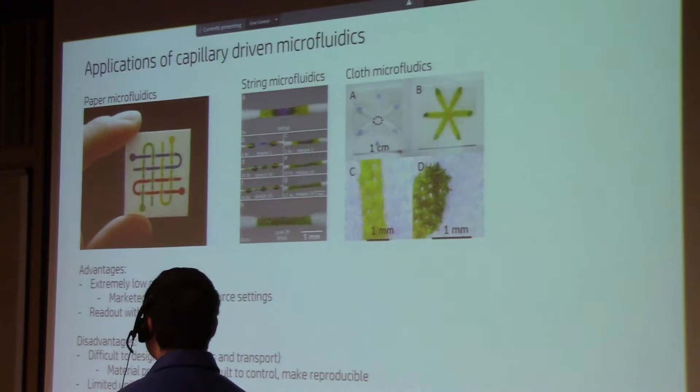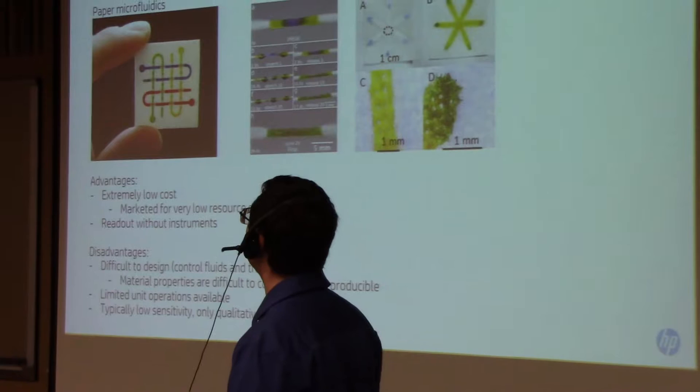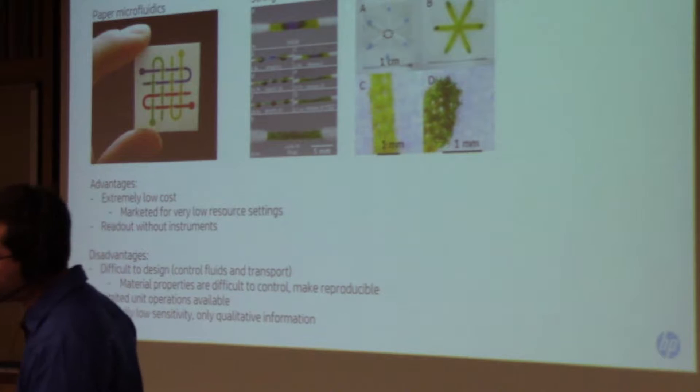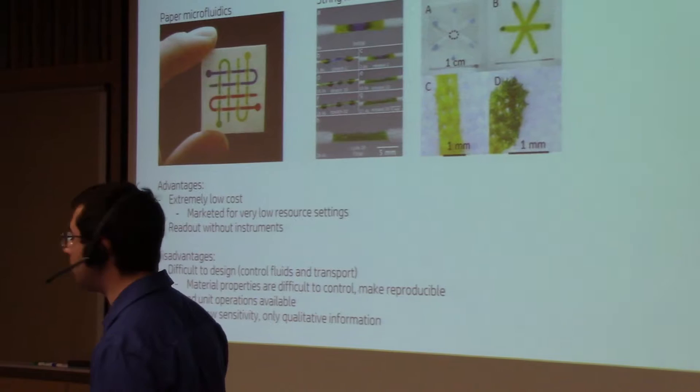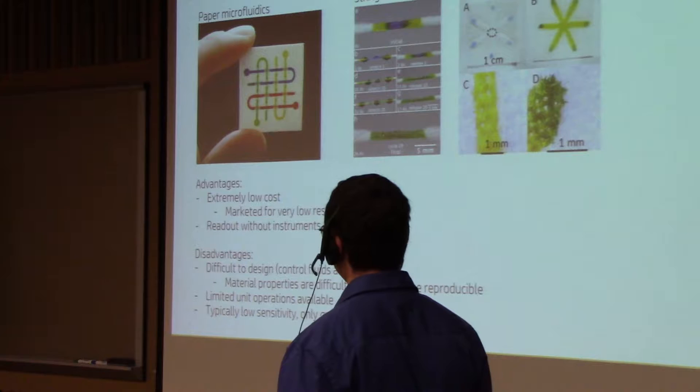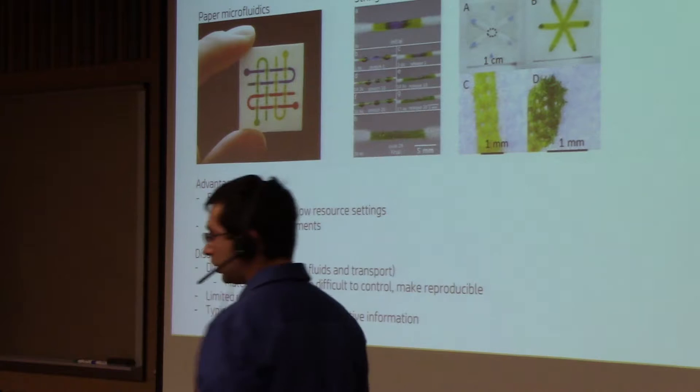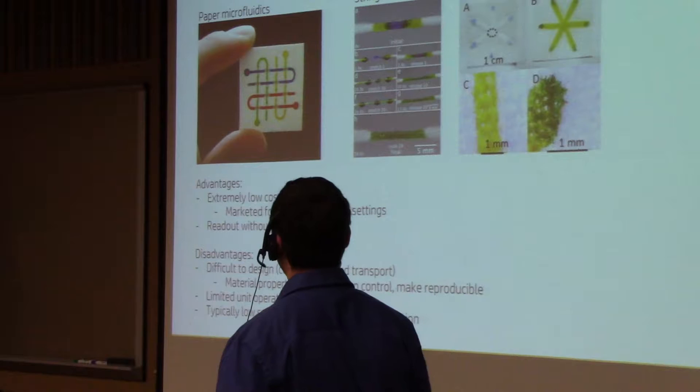There's also a limited number of unit operations that are available. Valving is typically very difficult. You have to rely on these kind of sugar valves that dissolve by the flow or dissolve by high enough flow, and they can control timing, for example. But there aren't very many other unit operations that are available. And typically, because the readout is by eye or inexpensive optics, the sensitivity is pretty low and you can only pull out fairly qualitative information.